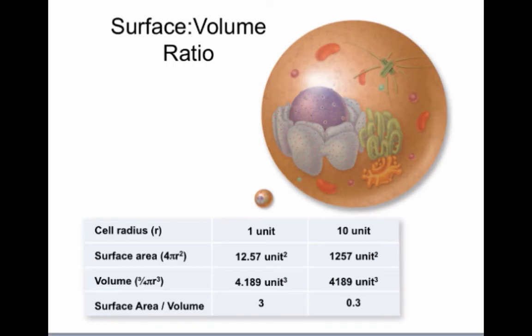They need to uptake nutrients from the environment, they need to remove waste, they need to communicate with other cells or communicate with the external environment, and they do all these things through their cellular membrane.